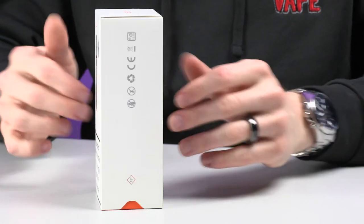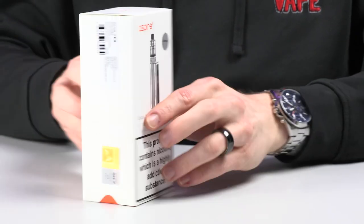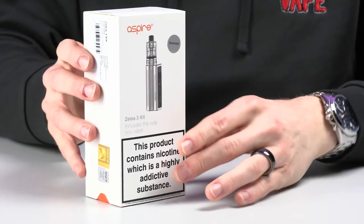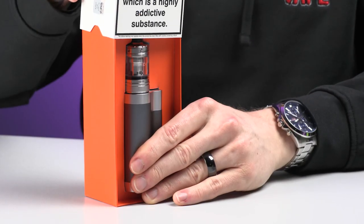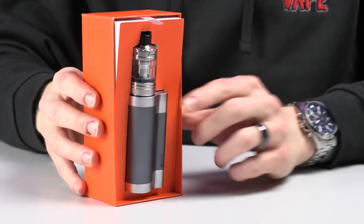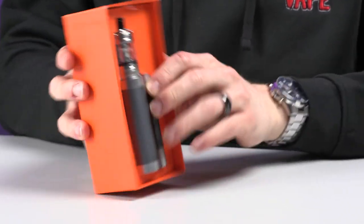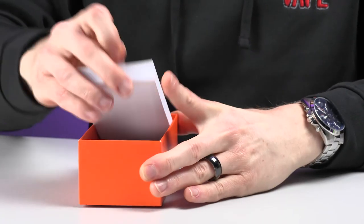So here we have the box for the Aspire Xellus 3 kit. It's a bit of a large box because this is a box mod, so it's a bit larger than, say, a pod device. Taking the sleeve off, there's the device itself, and it's already set up for you, but we will come back to this.